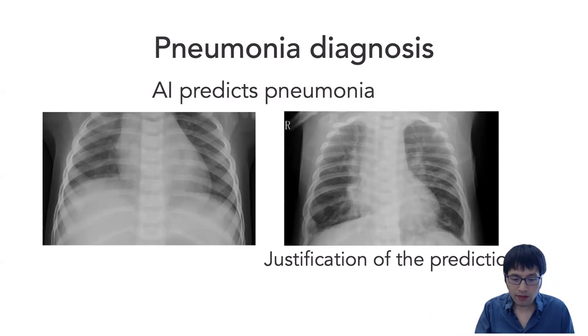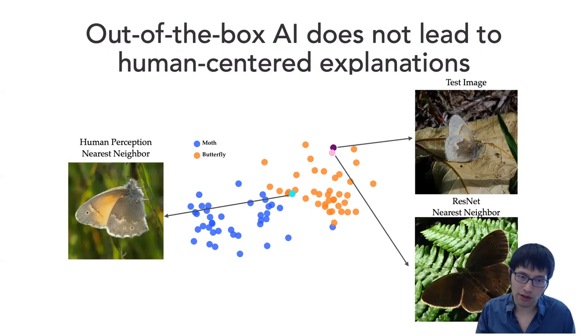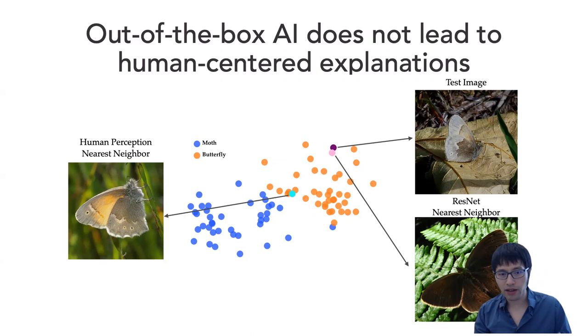However, this similarity measure requires an important property of the explanation. It requires that when AI generates explanations, it knows what a human similarity measure looks like. Out of the box, AI explanations may not be able to achieve that. For example, in this well-learned classifier, each dot refers to an image in the task of moth versus butterfly. This is a very good classifier because these two classes are well separated. But if we look at a test image and use the AI representations to find the nearest neighbor to the test image, it chooses the right bottom one. We realize that this looks nothing like the test image. If we use human perception to choose the nearest neighbor, we'll choose this one, which looks much more similar to the test image.